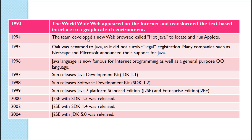In 1994, the team developed a new web browser called HotJava to locate and run applets. Applets means small Java programs. In 1995, Oak was renamed to Java as it did not survive legal registration, and many companies such as Netscape and Microsoft announced their support for Java. In 1996, Java became famous for internet programming as well as general-purpose object-oriented programming.